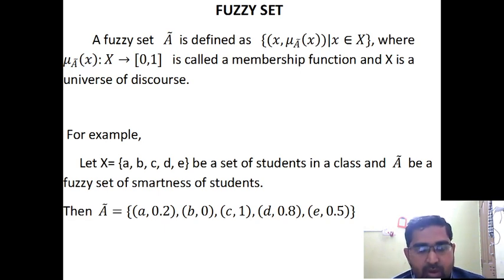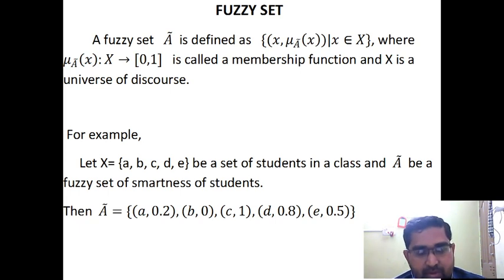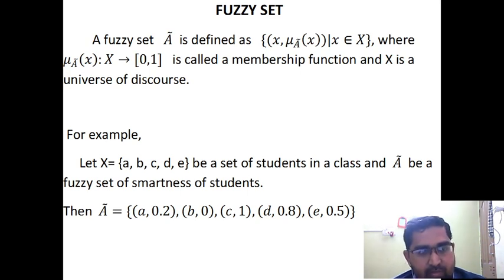So this set — this Fuzzy Set — is based only on the membership function, but a general Crisp Set is based on the characteristic function. That is the main difference.